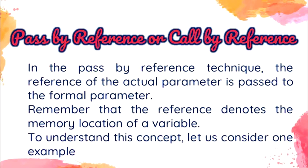The next one is pass by reference, or call by reference. In this technique, the reference of the actual parameter is passed to the formal parameter. Remember that the reference denotes the memory location of a variable. As a result, both the actual parameter and the formal parameter represent the same memory location. Hence, the called method works with the original data rather than its own copy. Thus, any changes made to the value of the formal parameter also get reflected in the actual parameter.